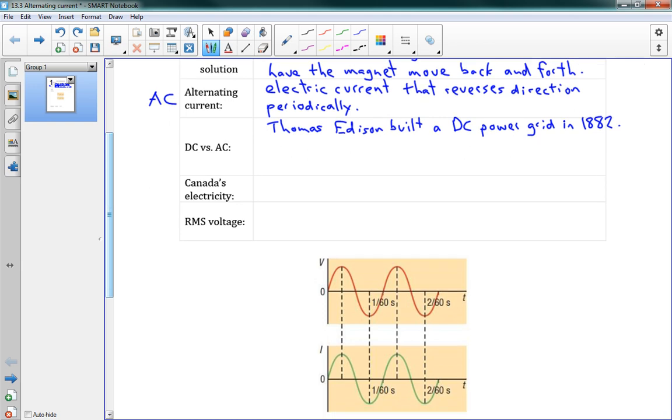But, a little while later, Nikola Tesla thought that was a good idea, but it would be a lot better with AC. So he built an AC power grid in 1896. So about 14 years later.